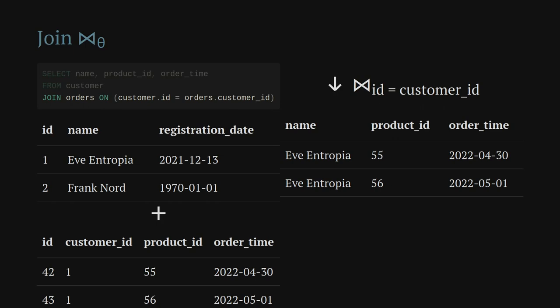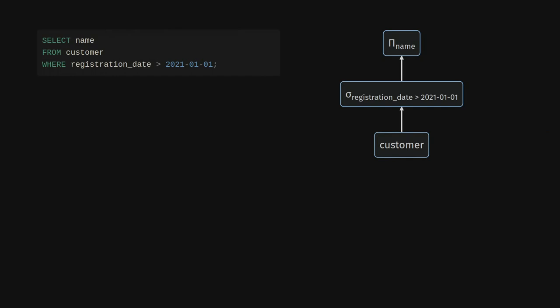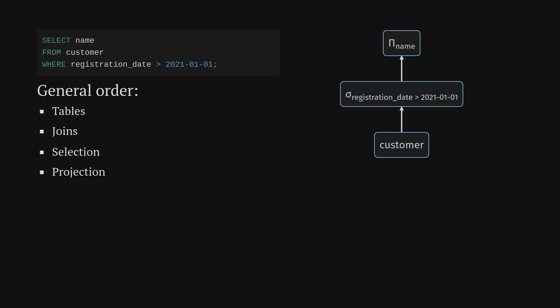Now let's look at entire queries represented as expression trees. Data flows from bottom to top: we start with all rows from the customer table, do the selection, then the projection, and the root at the very top gives the final result. The general naive order for these nodes is: start with the tables, then do the joins, then the selection if we have one, and then the projection. This is the naive order that will always give you the correct result.